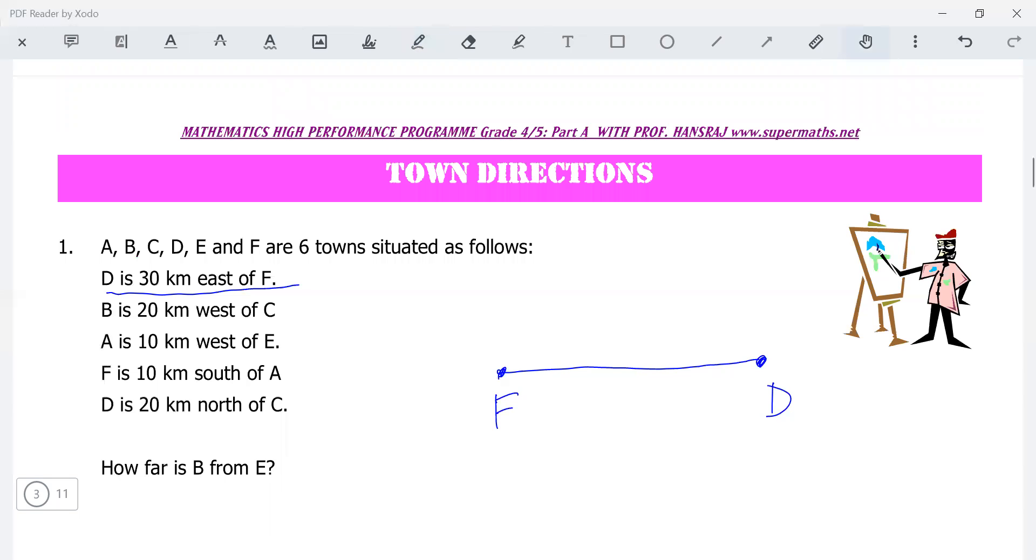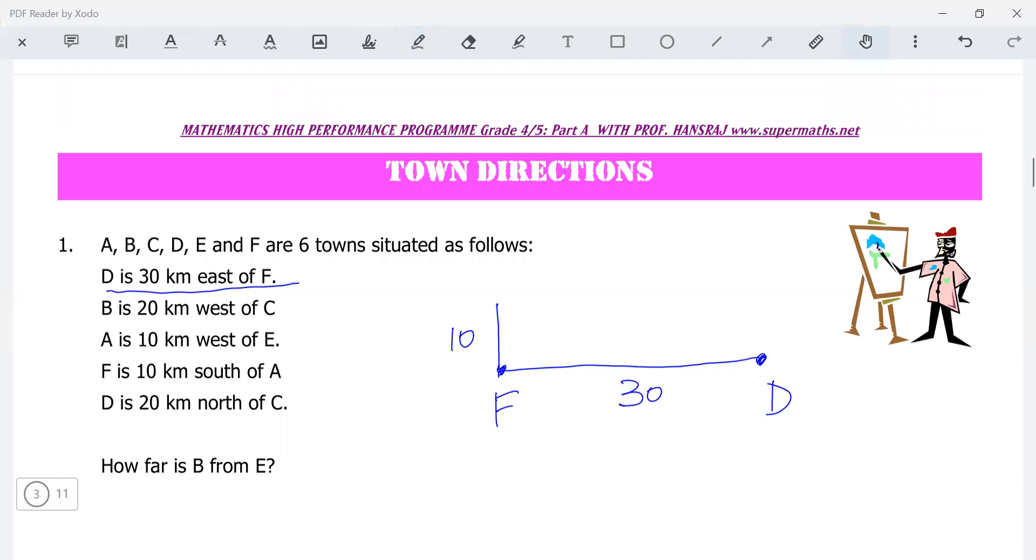B is 20 kilometers west of C. We'll come back to that. A is 10 kilometers west of E. We don't have that. F is 10 kilometers south of A. So let us draw 10. Remember, this was 30, so we should draw 10 to be much shorter than that. And F is 10 kilometers south of A, so this would be A here.